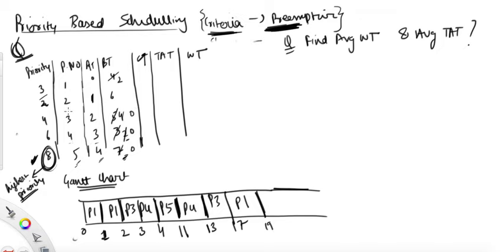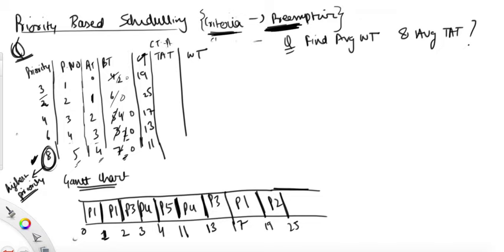Now the last process, P2, for six units of time — that means it becomes twenty-five. So the completion time of P2 is 25, P1 is 19, P3 completion time is 17, P4 completion time is 13, and P5 completion time is 11.